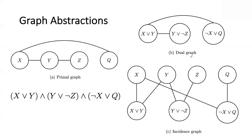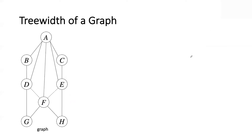Let's focus on the primal, dual, and incidence graphs. You can go invent your own abstraction — these are the common ones. Now let's talk about properties. When you look at a graph there are different properties: tree width, branch width, path width, and so on. Tree width is the one that has received the most attention.